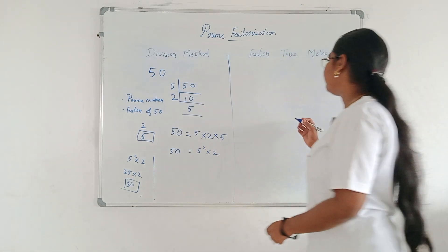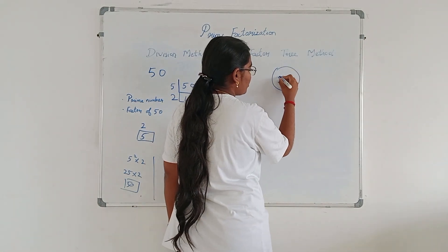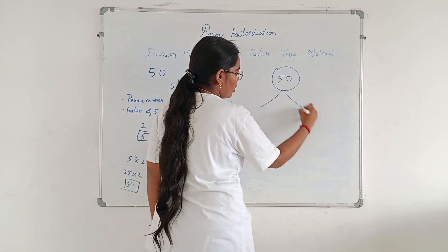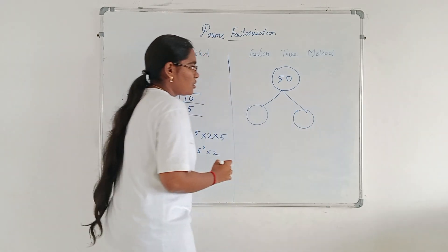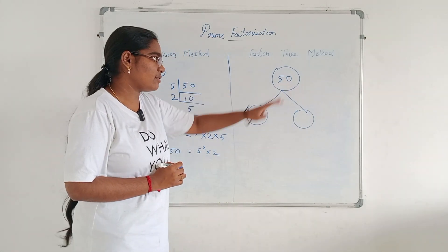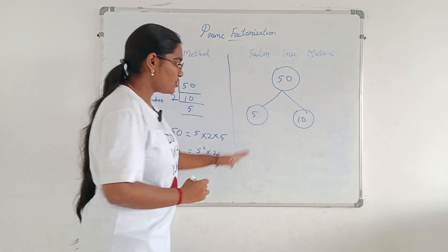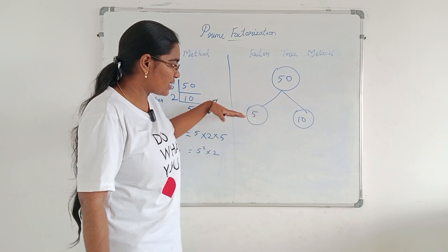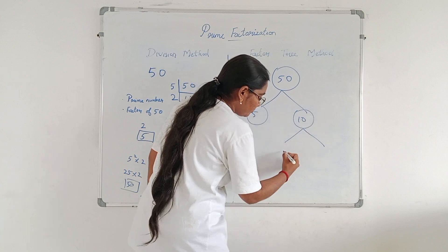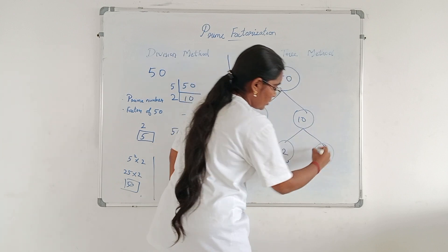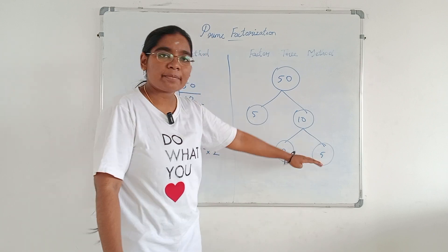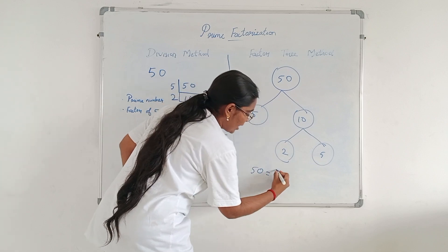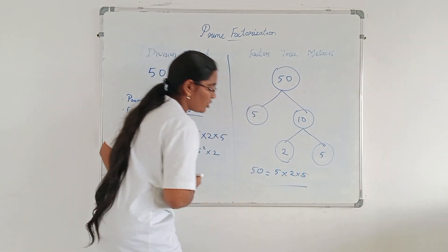Now by the factor tree method: write 50, then write it as 5 into 10. Since 5 is a prime number, leave it. For 10: write 2 into 5. Both 2 and 5 are prime numbers, so leave them. Finally, 50 equals 5 into 2 into 5. This is your final answer.